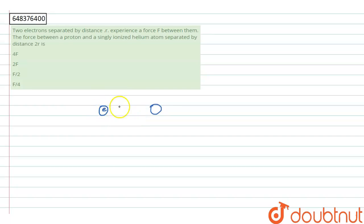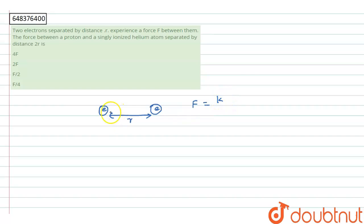The two electrons, each of charge e, are separated by a distance r. So the electrostatic force F between the two electrons is the constant k multiplied by the charges of the two electrons — e into e — divided by the distance squared, r square.